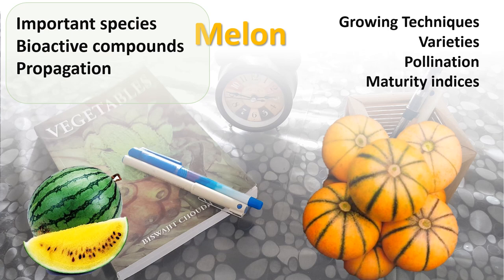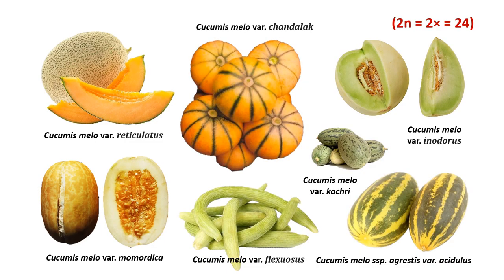Throughout the world, two major melon species are commercially cultivated. One is Cucumis melo. It has different botanical varieties. In India, one botanical variety, Cucumis melo var. momordica, is generally cooked as a vegetable. When it matures and ripens, it splits and is called 'phoot' or 'phooti'. Another important botanical variety is snake melon, that is Cucumis melo var. flexuosus, which is never consumed after ripening — it is generally consumed as a green vegetable like cucumber.